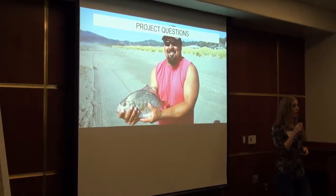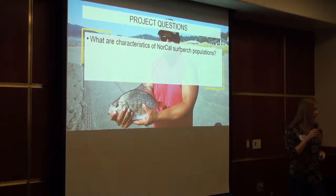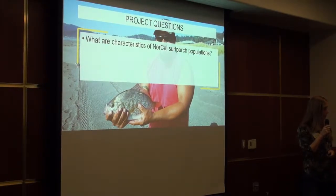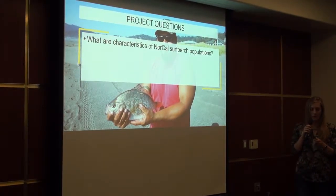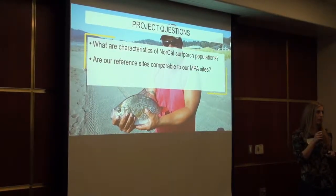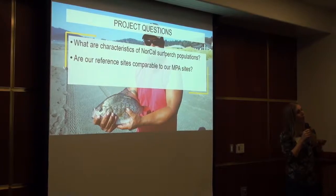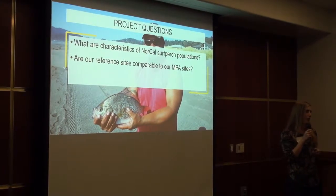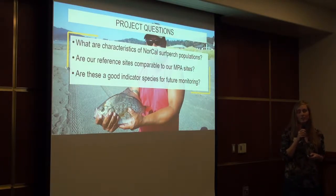Now let's go over the project questions we had for the surf zone fishes. First, what are the characteristics of our Northern California surf perch populations? Second, are our reference sites comparable to our marine protected area sites? That's important to know at this early stage, when the MPAs were just established, so we can make meaningful comparisons in the future. Third, are these a good indicator species for future monitoring — will we want to continue monitoring them to detect effects of marine protected areas?